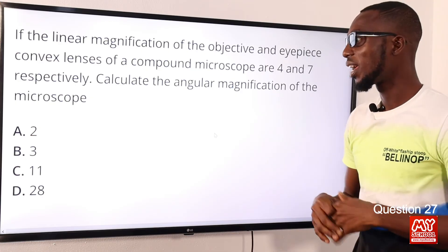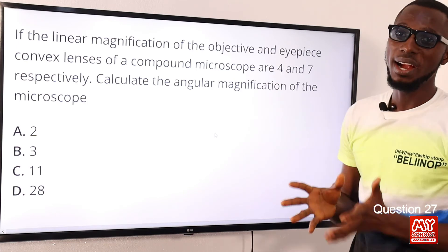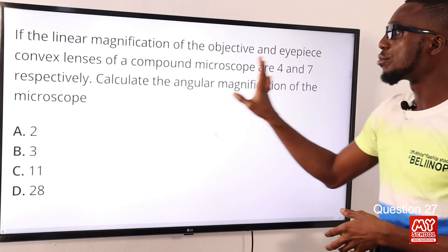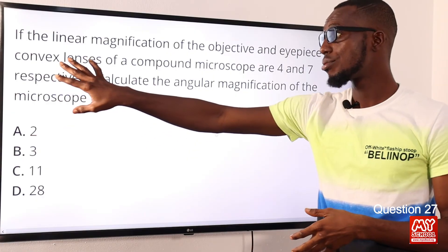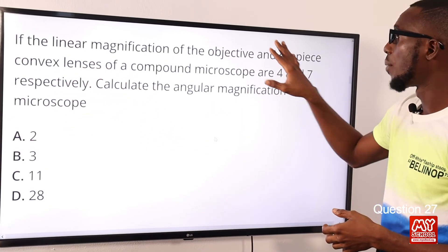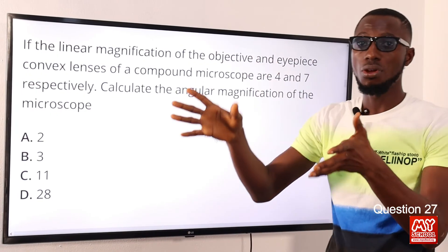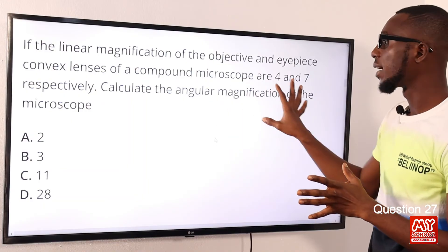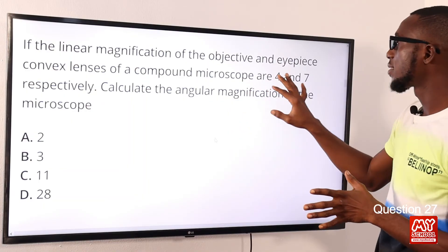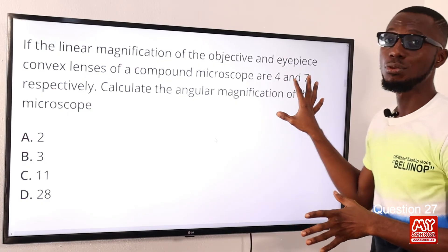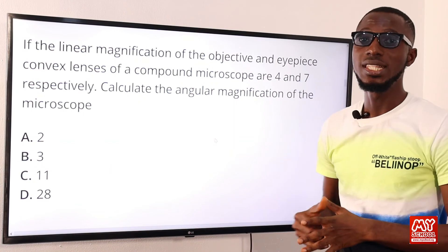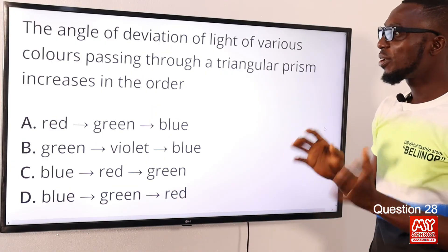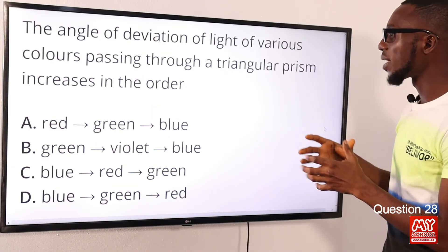Question 27: If the linear magnification of the objective and eyepiece lenses of a compound microscope are 4 and 7 respectively, calculate the angular magnification of the microscope. A compound microscope comprises two converging lenses: the objective, close to the object, and the eyepiece. To calculate the angular magnification, simply multiply the two values: 4 × 7 = 28. The correct option is D.